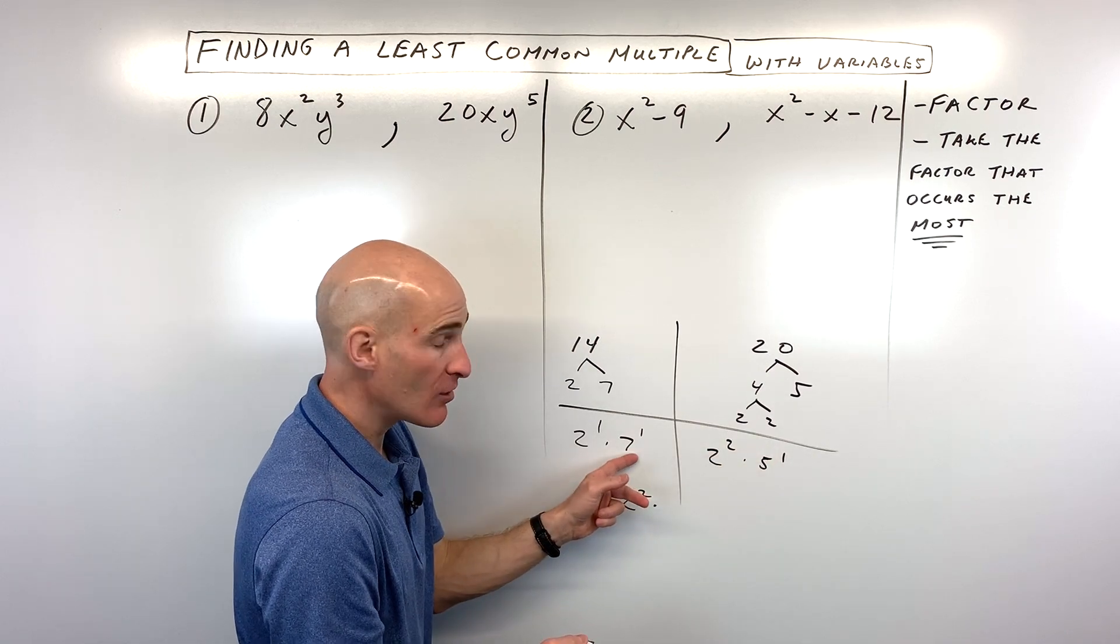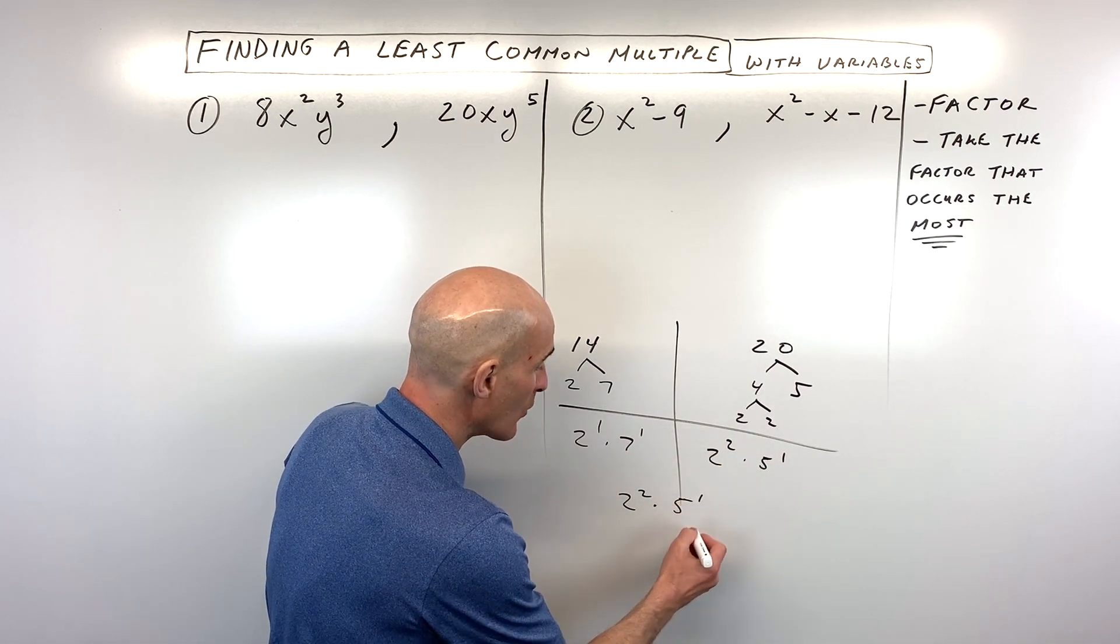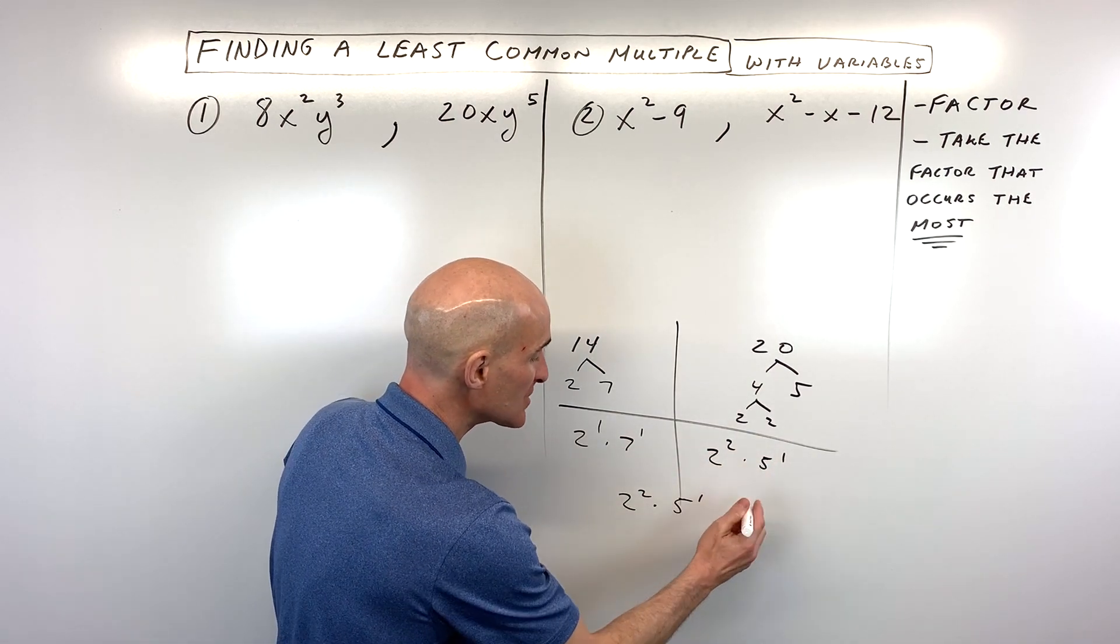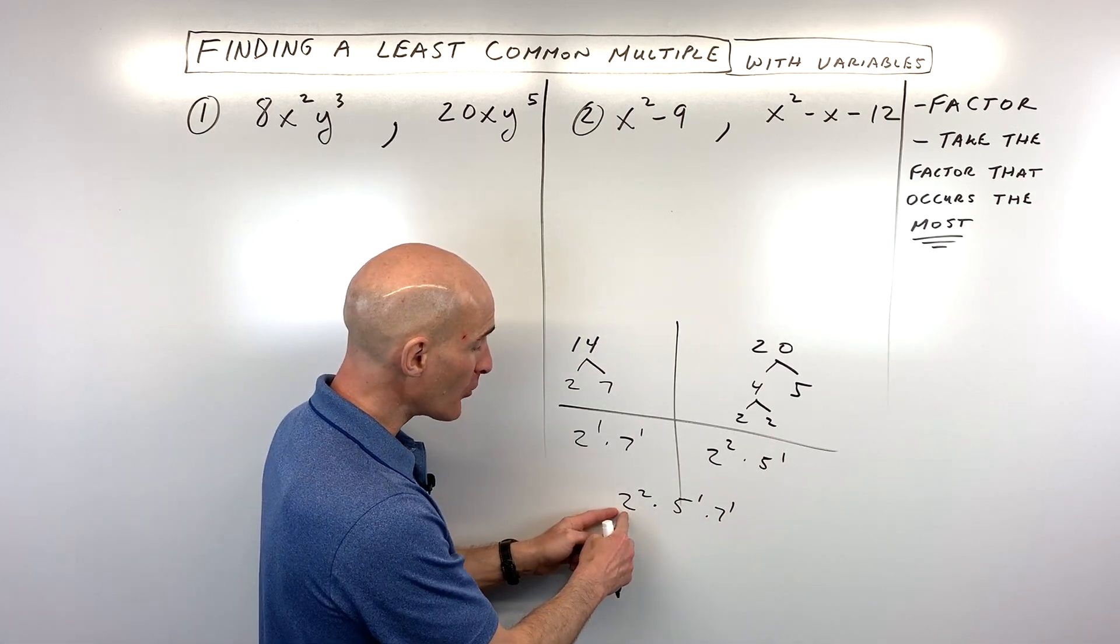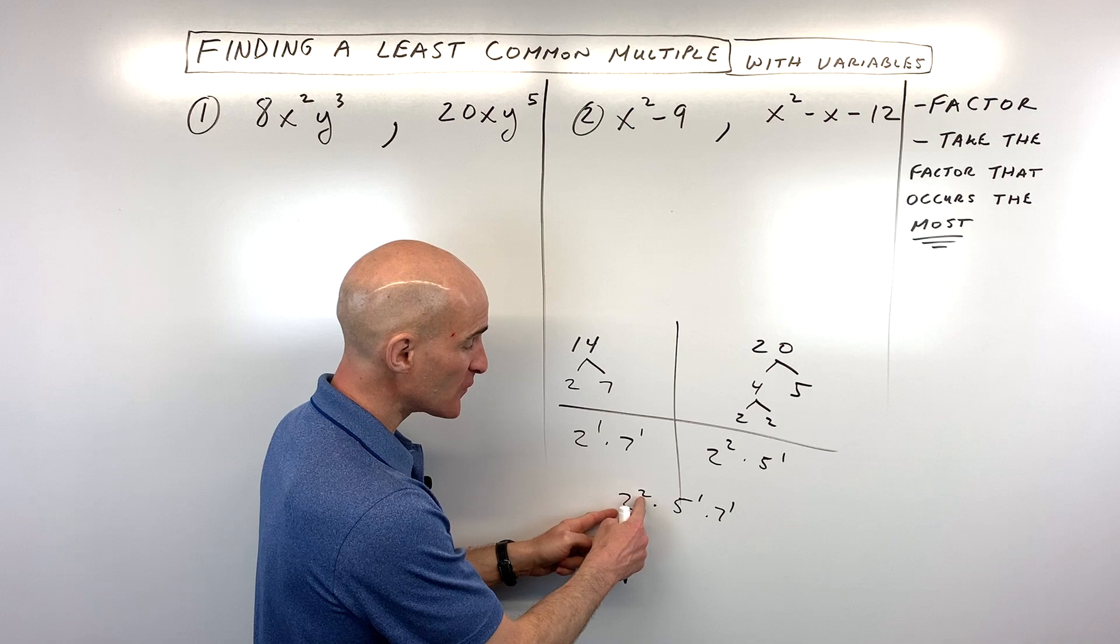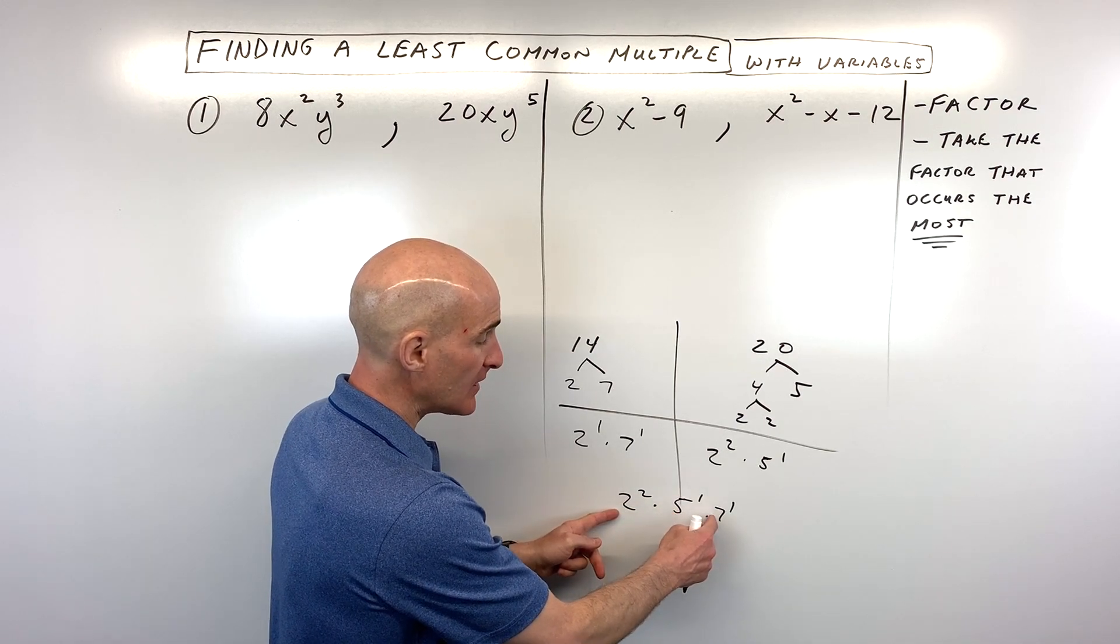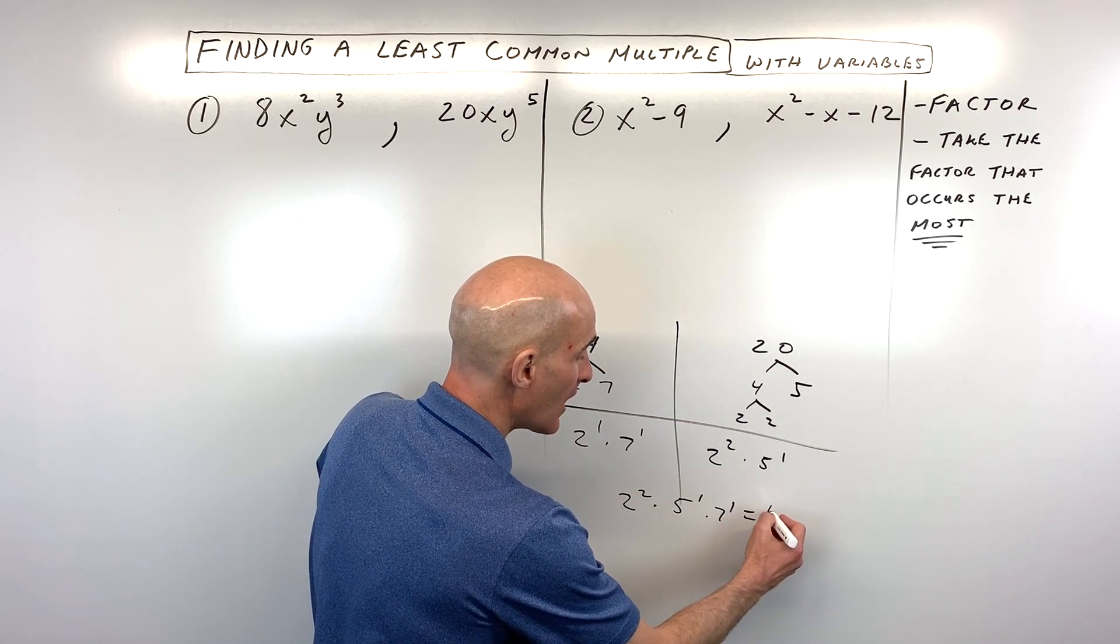Here we have 1 five, no fives, so we're going to take 1 five. One seven, no sevens, we're going to take 1 seven. Now if we multiply these together, we've got 2 squared is 4, times 5 is 20, times 7 is 140.